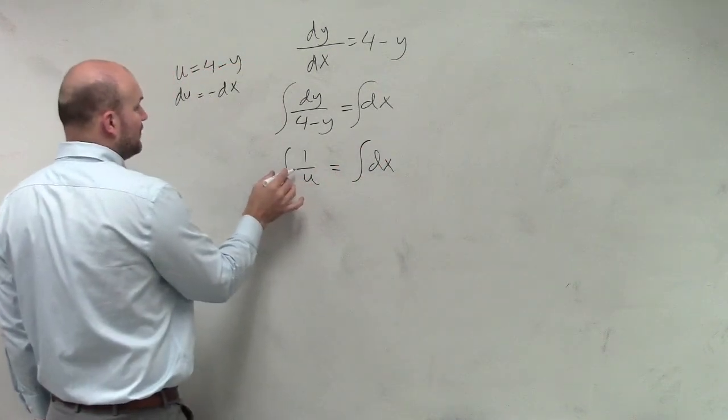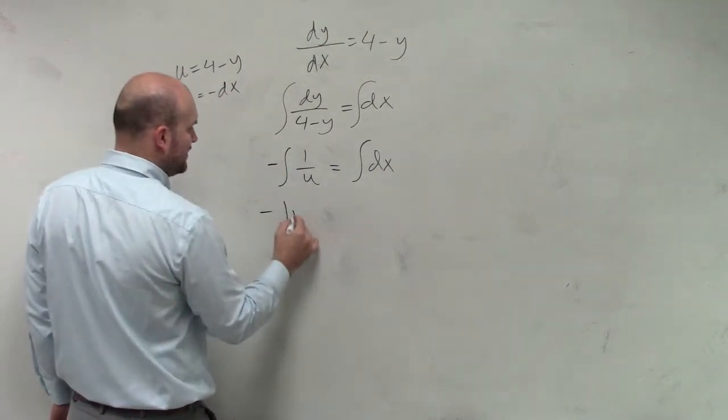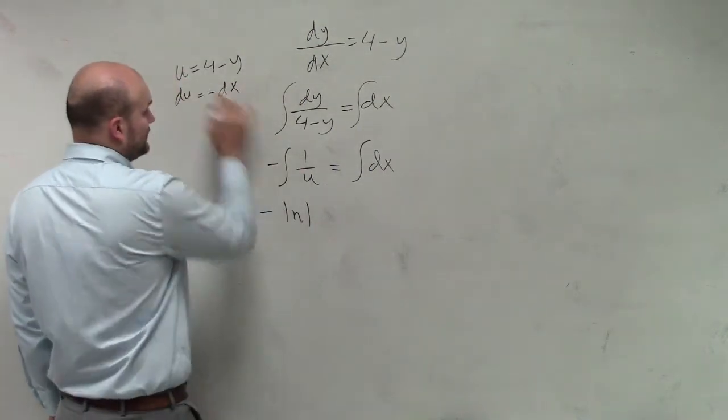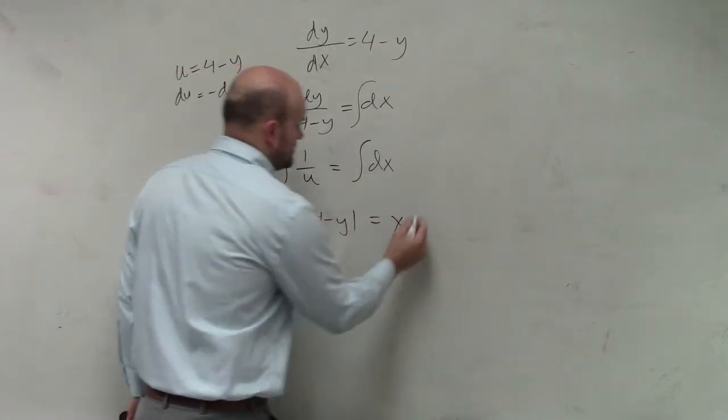Integrate dx. So therefore, I'm going to multiply that by the negative, so I have a negative ln of absolute value of u, or 4 minus y, equals x plus c.